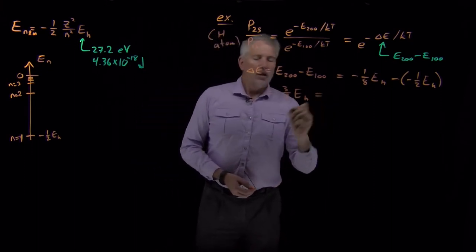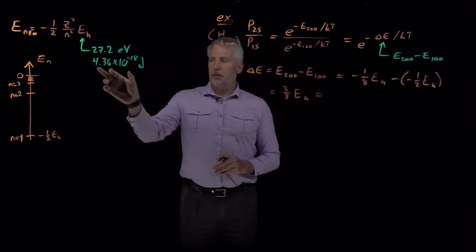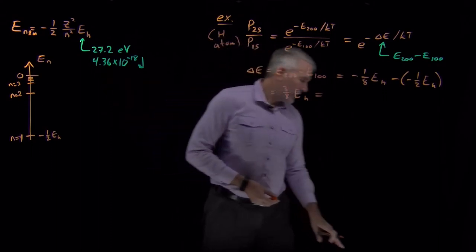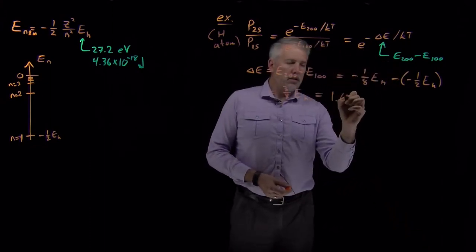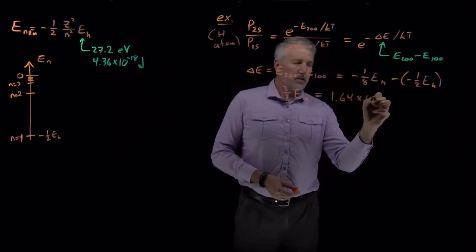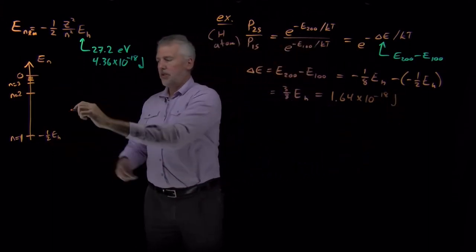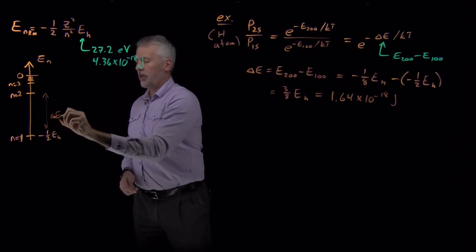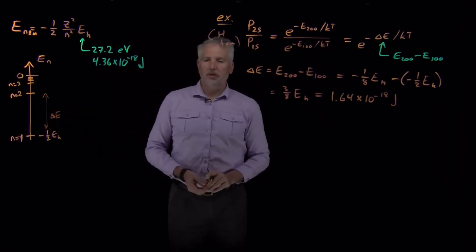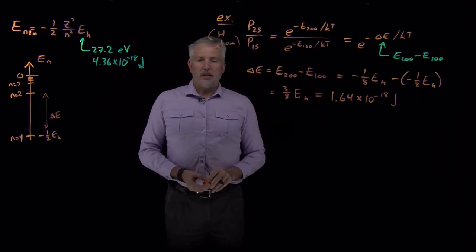And if we multiply, let's do the calculation in SI units, if we multiply this number by 3/8, the difference in energy between these two states, this delta E between the N equals 2 and N equals 1 state, that particular difference in energy is 1.6 times 10 to the minus 18th joules.